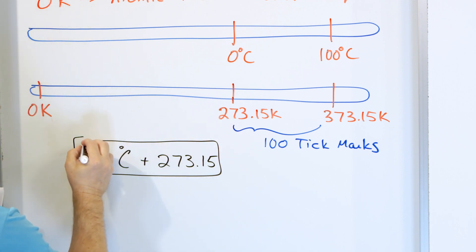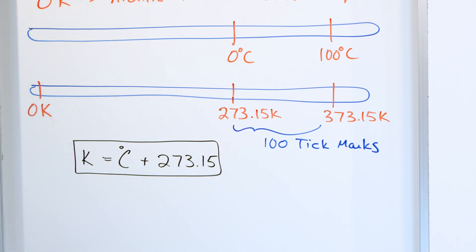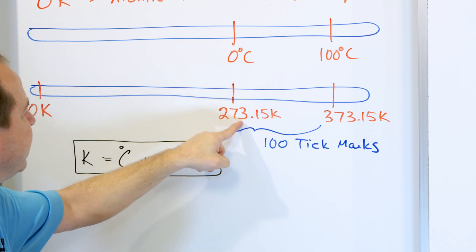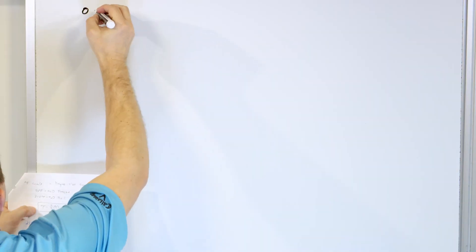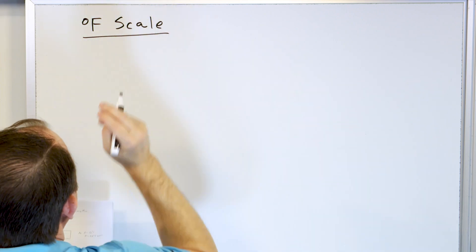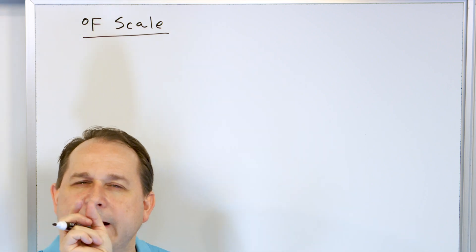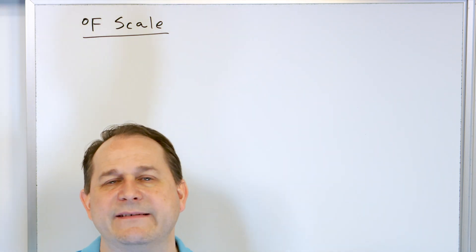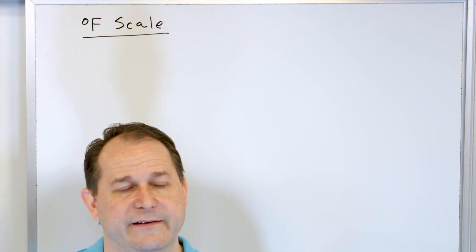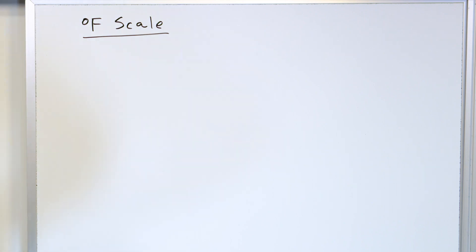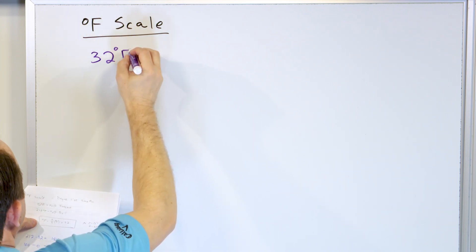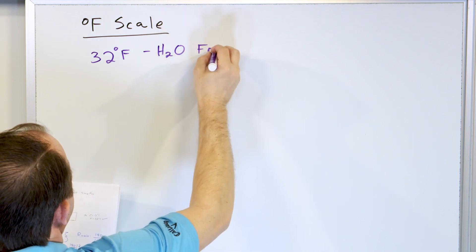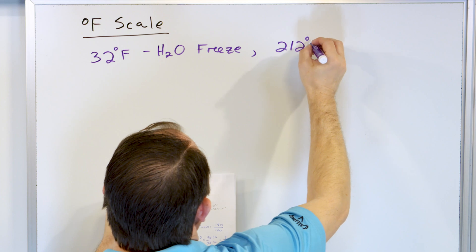That's your conversion factor, but it's different than regular conversion factors. You don't multiply or divide to convert temperatures — you just simply add a number. So at zero Celsius, if I put zero in and add 273.15, I get the correct answer in Kelvin. If I put 100 degrees Celsius in and add it, I get the same correct answer. Now I want to talk a little bit about the Fahrenheit scale. In the Fahrenheit scale, 32 degrees Fahrenheit is when water freezes, and at 212 degrees Fahrenheit, water boils.